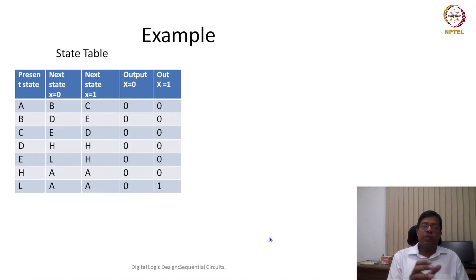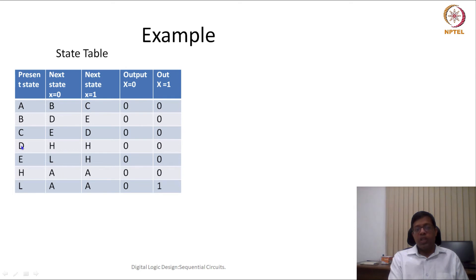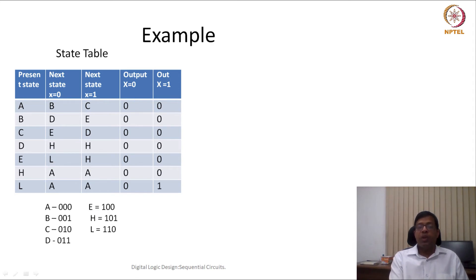In this lecture we took an example trying to find the finite state machine for matching the pattern 1001 and 1010, and we came up with an optimized reduced state table. In this reduced state table, the unique states are A, B, C, D, E, H, and L — seven states in total. For seven states we would require at least three bits to represent. We now have to assign which three-bit value to give each state.